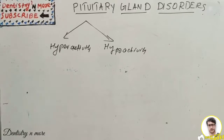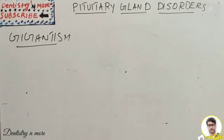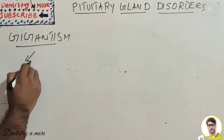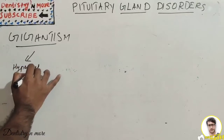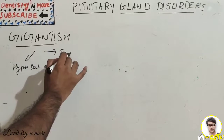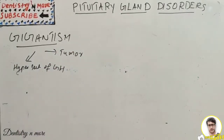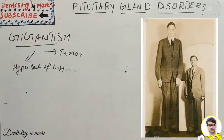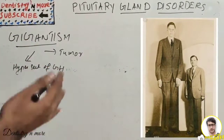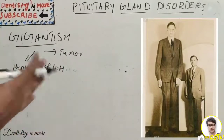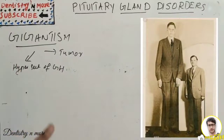Gigantism is caused by anterior pituitary hypersecretion. The basic causes are hypersecretion of growth hormone in childhood or pre-adult time, or a tumor of acidophilic cells of the anterior pituitary. Signs and symptoms include a height of seven to eight feet, hyperglycemia, glycosuria, pituitary diabetes mellitus, headache due to the tumor, and visual disturbances.